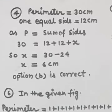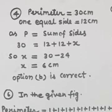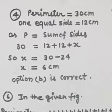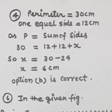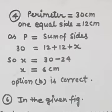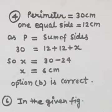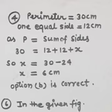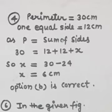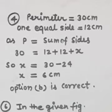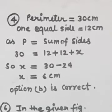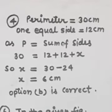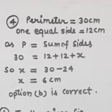Question number 4: the perimeter of an isosceles triangle is given, one of the equal sides is 12 cm, and we have to find the smallest side. Using P = sum of sides: 30 = 12 + 12 + X. So X = 30 − 24 = 6 cm. Option B is correct.